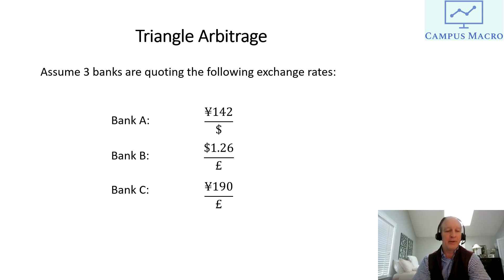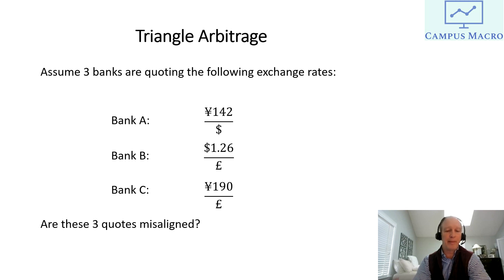Here are three different currency quotes from three different banks. Bank A is quoting 142 yen per dollar. Bank B is quoting $1.26 per pound. Bank C is quoting 190 yen per pound. The question is: are these three quotes misaligned? If they are aligned, there's probably no arbitrage opportunity, but if they're not, then there will be one.